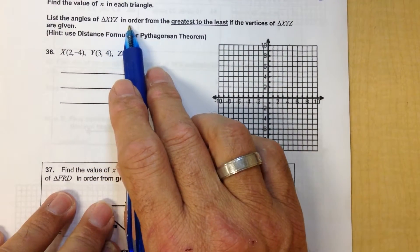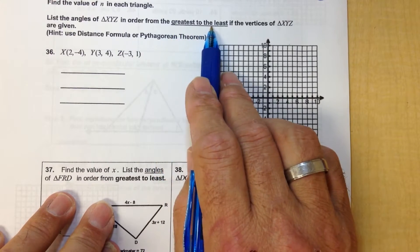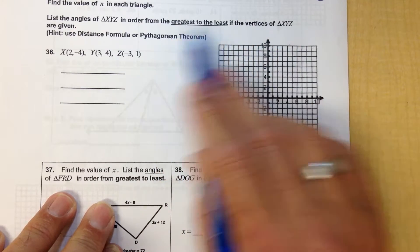Okay, list the angles of triangle X, Y, Z in order from greatest to least if the vertices of X, Y, Z are given.